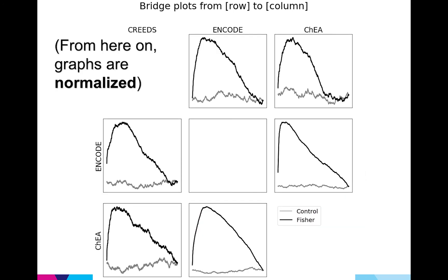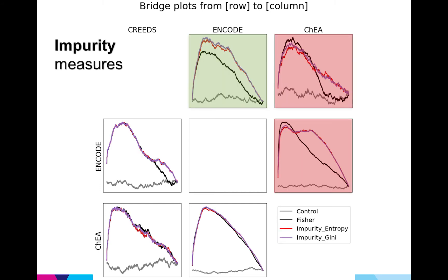So I'm just going to normalize the graphs from here on out so we can see the lines better. The impurity measures were really similar to Fisher's. They did a little worse in two of the cases but they really improved when going from CREEDS to ENCODE.